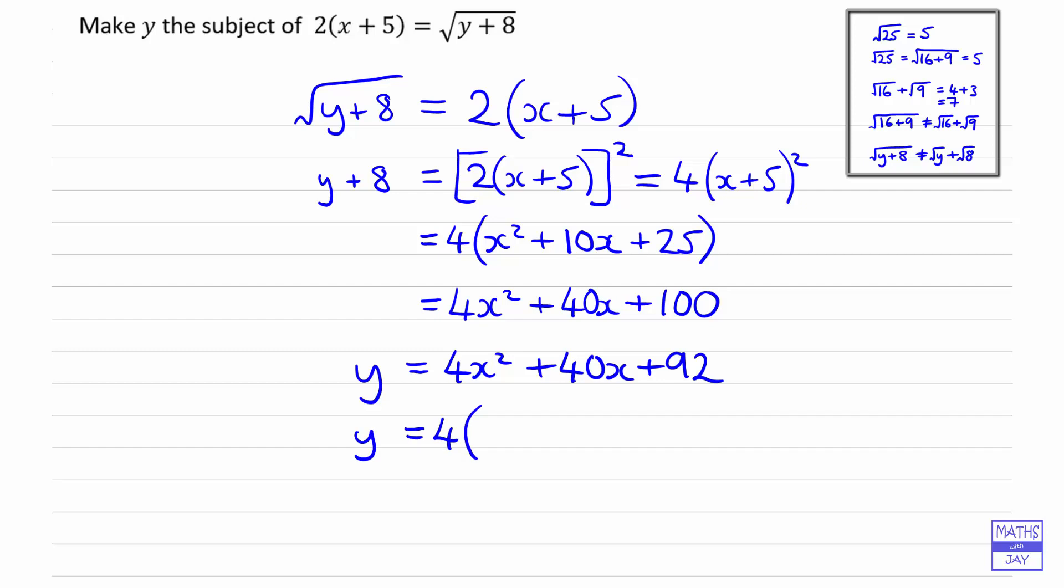And then if you want to, you can factorize that. You can see why I said you didn't actually have to multiply out the bracket, because you could have left it in factorized form. Because it happens to be the case that 8 is a multiple of 4, it would have been easy to not multiply out to start with. So you can see we've still got the x squared.